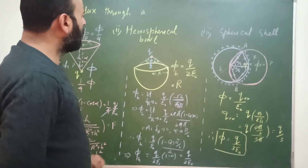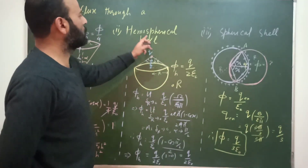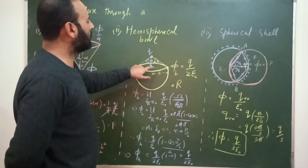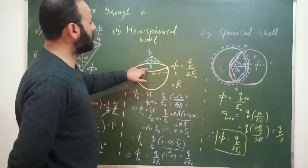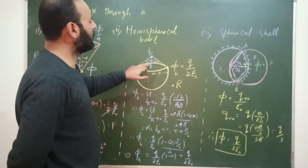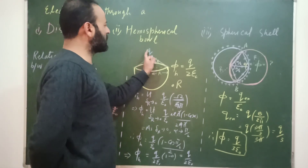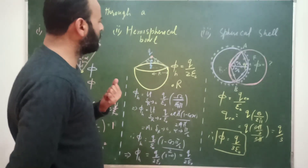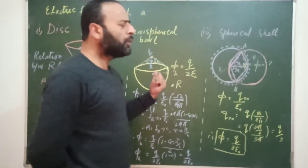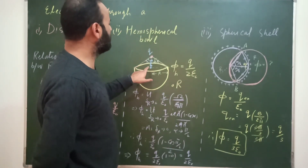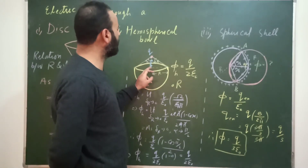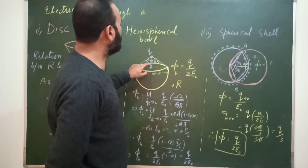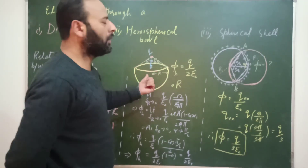Moving to the second part — the flux through the hemispherical bowl — the charge is placed just above the center of the base of the hemispherical bowl. Since the distance δr is very small and negligible, we can imagine the charge to be right at the base. When the charge is at the base, to enclose it we need the other half, i.e., a spherical shell.